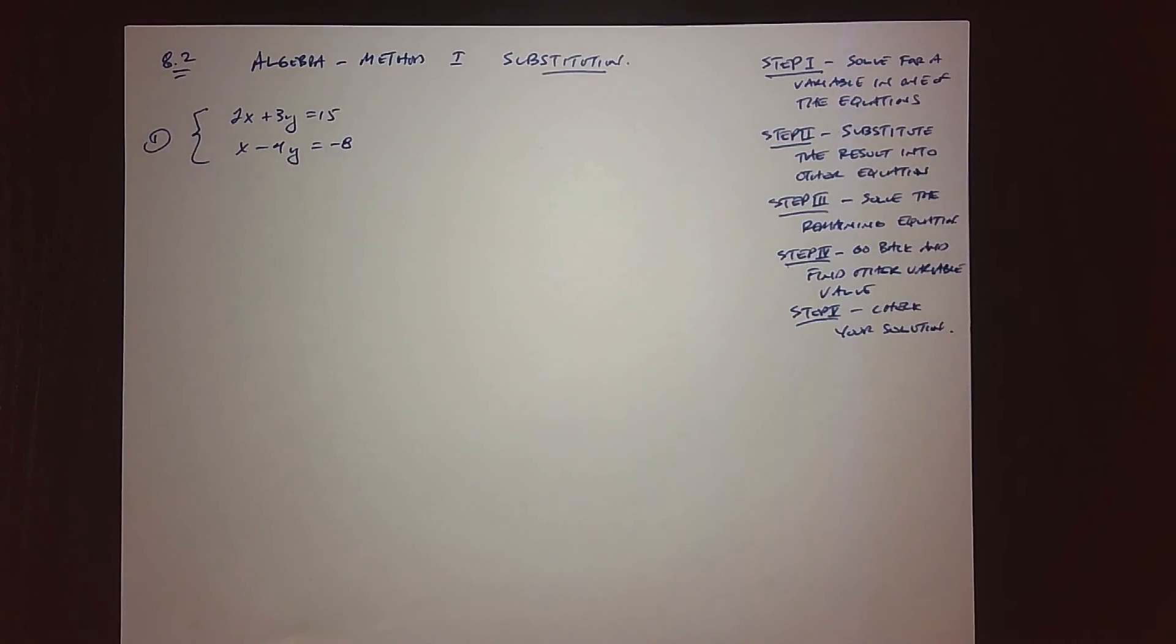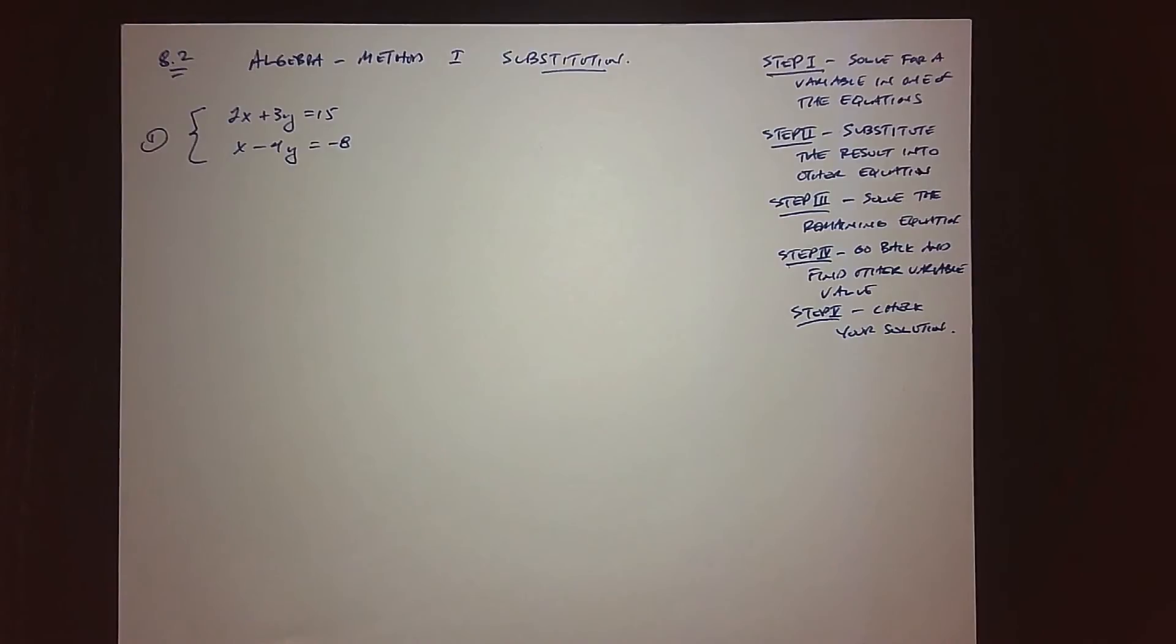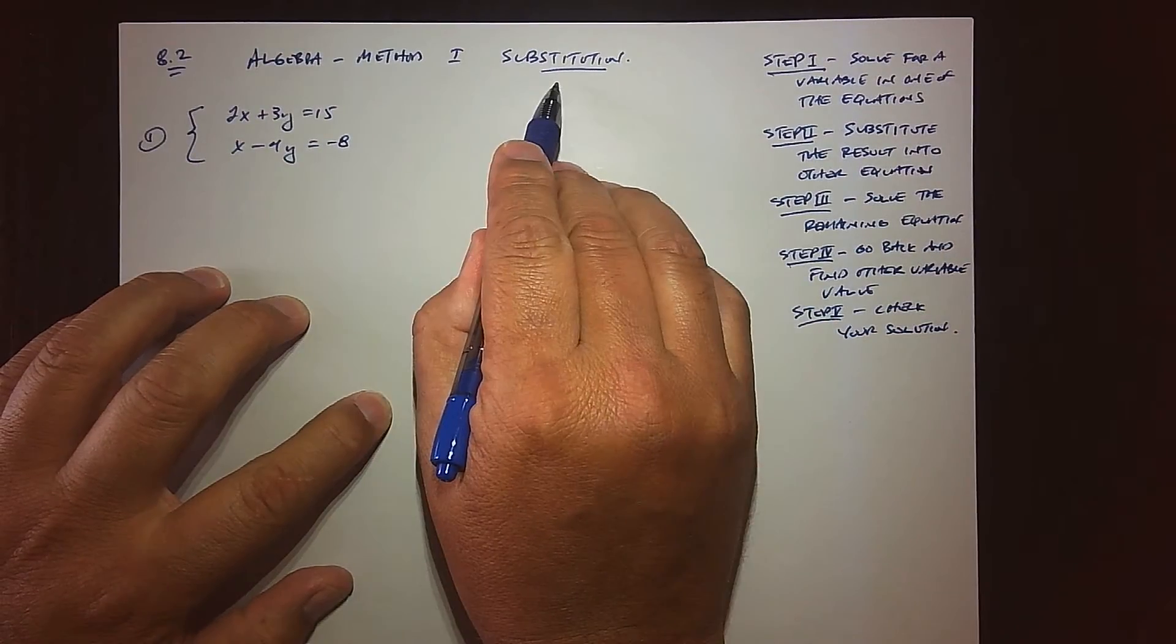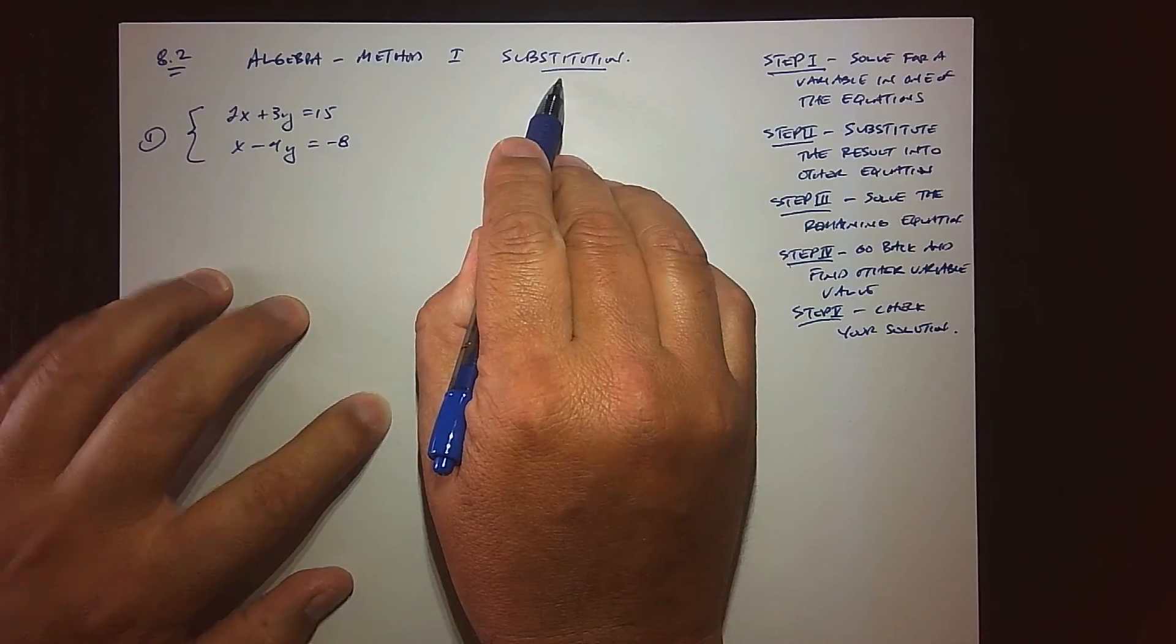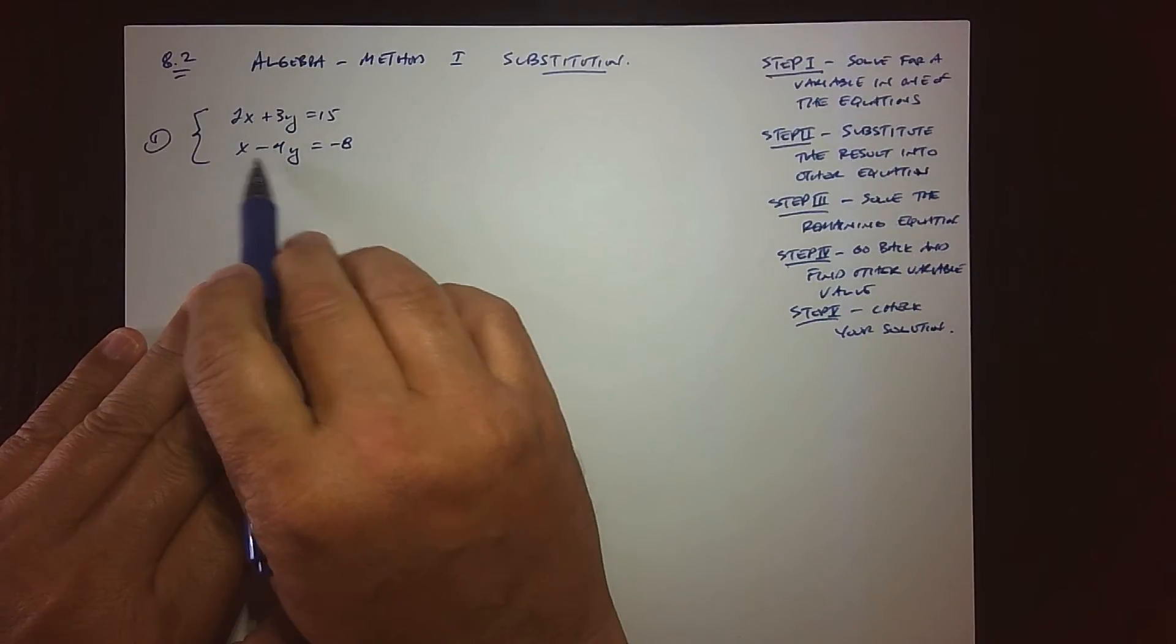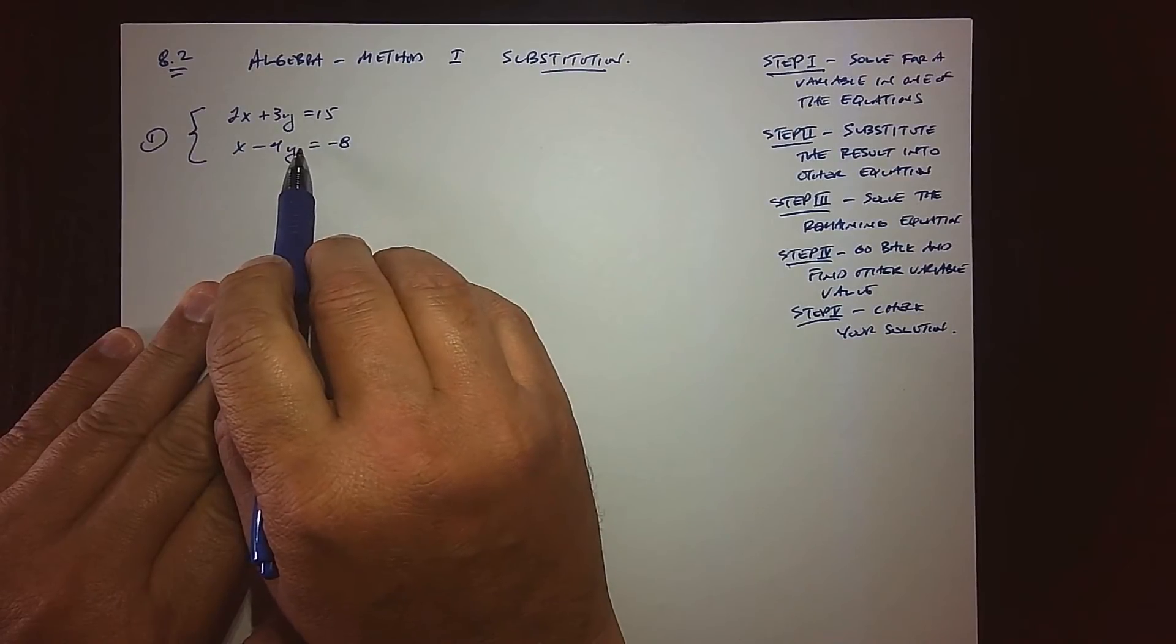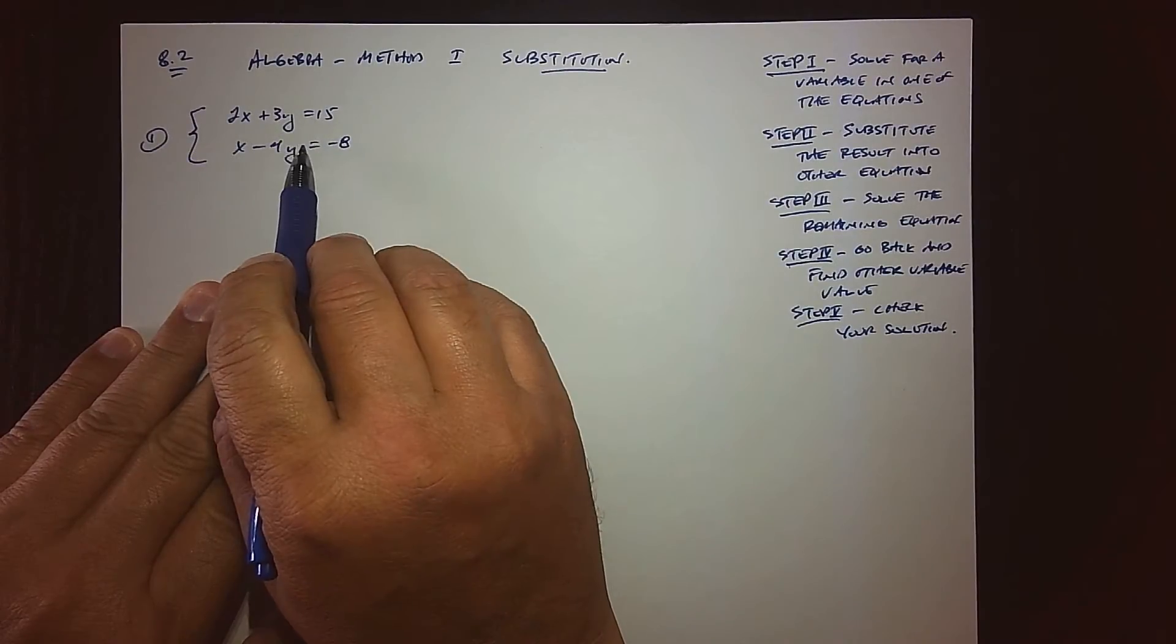Our first algebraic technique is called substitution. This is something we've been doing before. The name implies that we're going to be plugging things in for x and y, however we're not going to be plugging any random numbers like we did for graphing. There's actually a method to the madness.